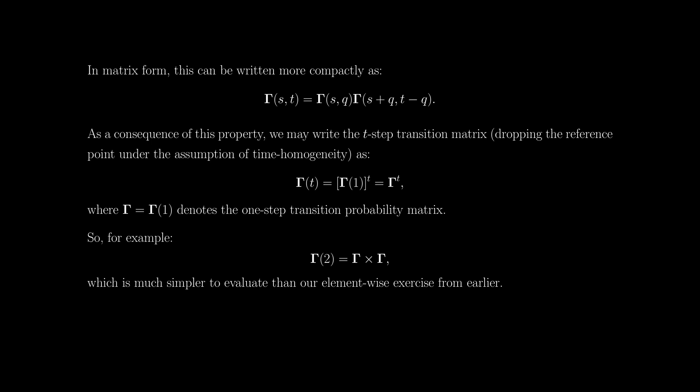And that concludes the proof. The keen among you would have spotted a familiar pattern: if you consider the definition of matrix multiplication, one can easily identify the Chapman-Kolmogorov equations as giving the elements of a matrix resulting from multiplying two matrices. Using our notation, the T-step transition probability matrix starting from time S is simply the product of the Q-step transition probability matrix starting from S, post-multiplied by the T-minus-Q step transition probability matrix starting from S plus Q. Dropping reference points under the assumption of time homogeneity, the expression simplifies further: we can calculate the T-step transition probabilities by simply powering up the one-step transition probability matrix.